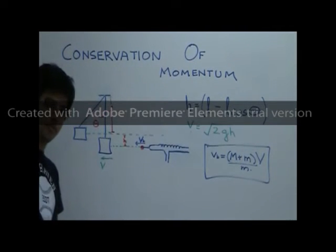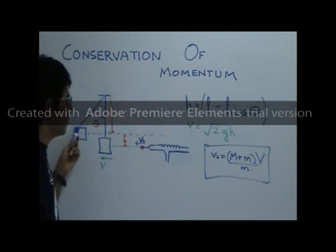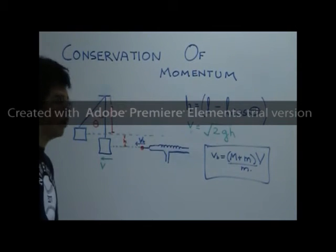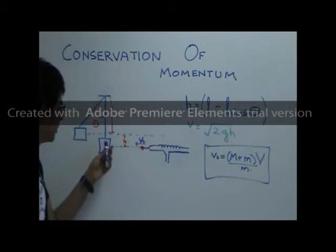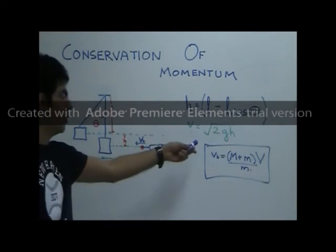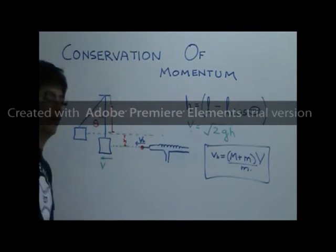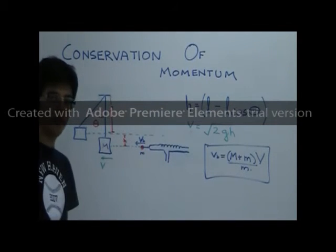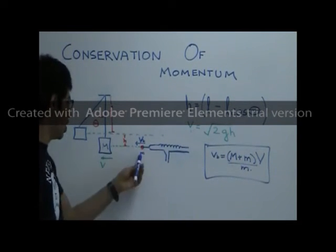Initially, we have kinetic energy — half mv squared — which is converted to potential energy, mgh. By solving that formula, the velocity of the pendulum at the point where the ball embeds into the catcher is given by the square root of 2gh, where h represents the maximum height of deflection. Applying conservation of momentum, m times the velocity of the ball equals (m plus M) times the velocity of the ball-catcher system.